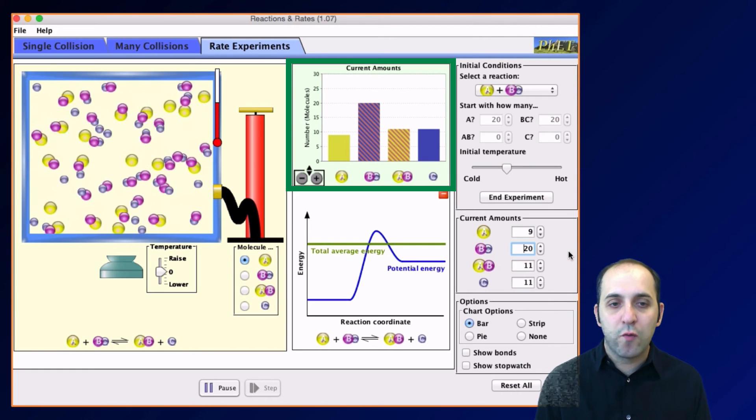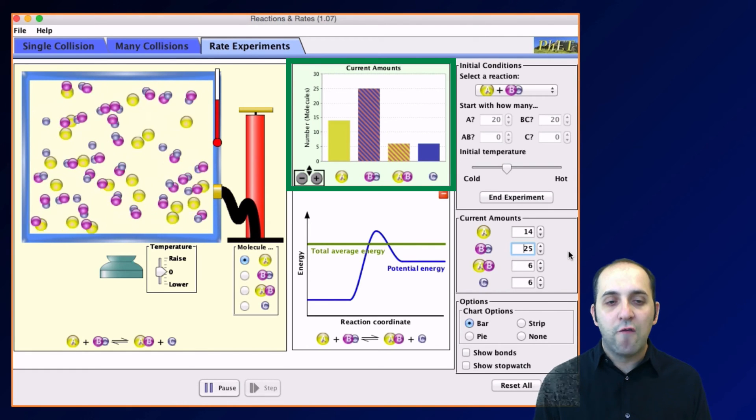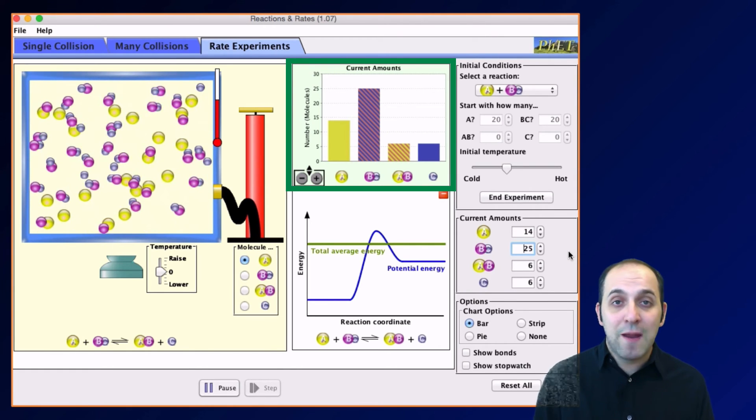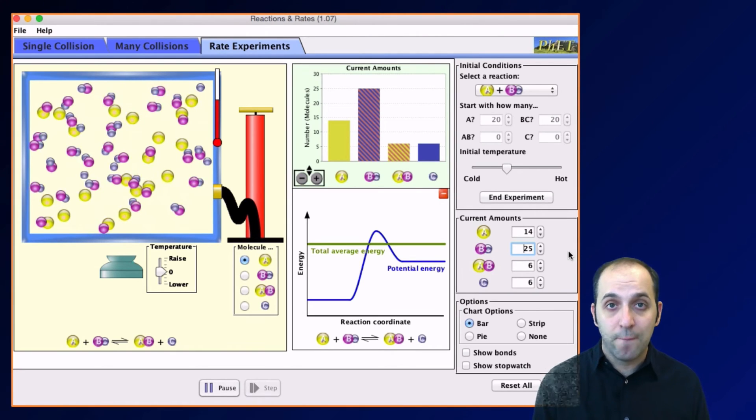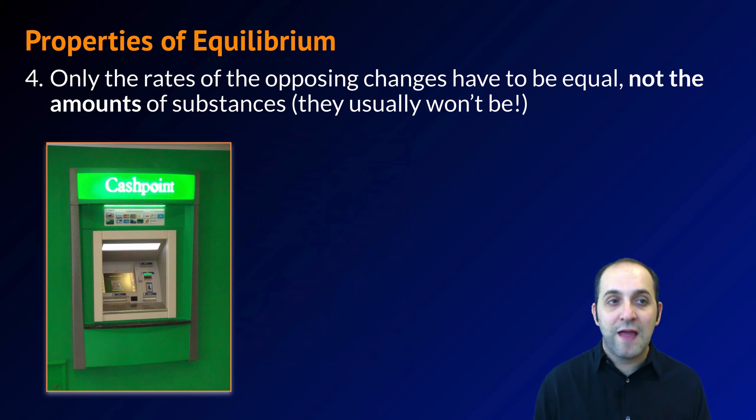You can see that once we get to that new equilibrium, we've now got different amounts of our materials than what we started with. That is a major characteristic of any equilibrium system. If you change the conditions, you change the equilibrium.